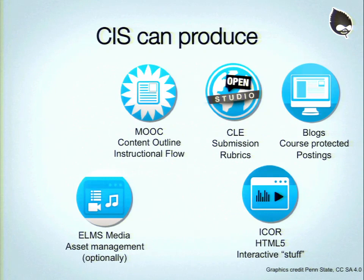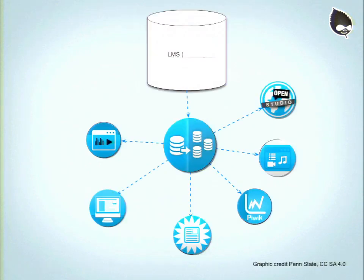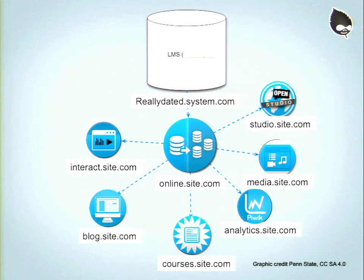The way we have this packaged also has support for non-Drupal platforms. We've got PWIC built into the entire thing. The way this is visualized: we've got really.data.system.com pointing out to online.site.com, and all the other tools live at a similar address. We've got the name of what something is — Interact, Blog, Courses, Analytics, Media, Studio — as a subdomain off of whatever the grouping organization is, whether it's a college, department, or a whole university.